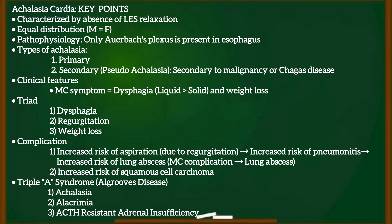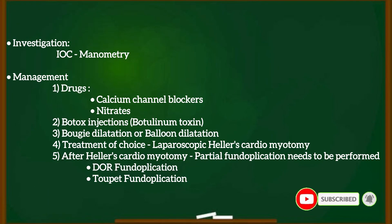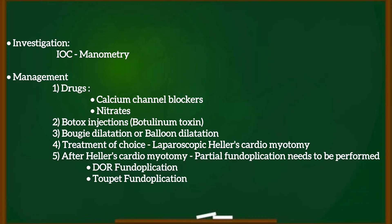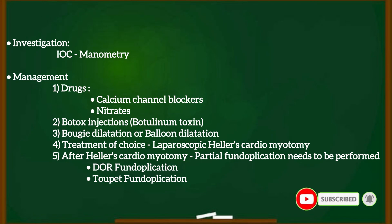The second complication is increased risk of squamous cell carcinoma. The AAA syndrome, also known as Allgrove's disease, involves achalasia, alacrima, and ACTH-resistant adrenal insufficiency. The investigation of choice is manometry. For management, drugs include calcium channel blockers and nitrates, botox injections or botulinum toxin, bougie dilatation or balloon dilatation. Treatment of choice is laparoscopic Heller's cardiomyotomy, after which partial fundoplication needs to be performed — either DOR or Toupet fundoplication.